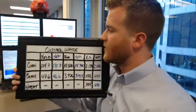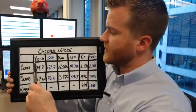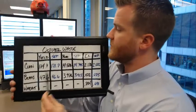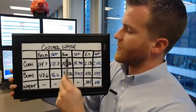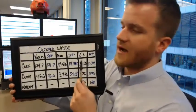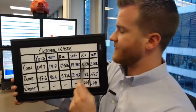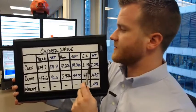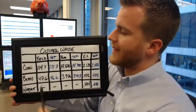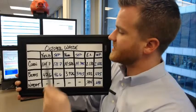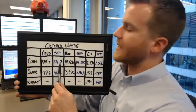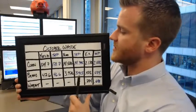First thing we're going to go over is yield versus the September WASDE report. Then we'll go over production versus the September WASDE report, and then ending stocks for 2014-15 versus the September WASDE report. In black is the average trade estimates and in blue is what we got in September from the USDA.